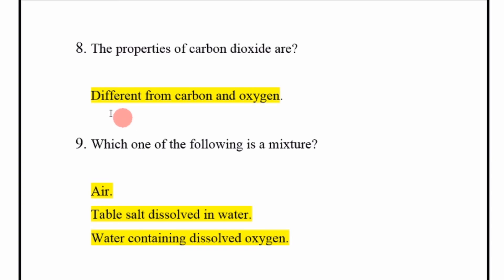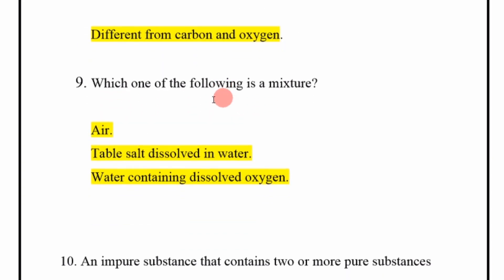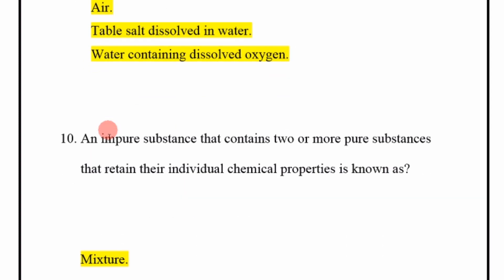Which one of the following is a mixture? Air, table salt dissolved in water, water containing dissolved oxygen. An impure substance that contains two or more pure substances that retain their individual chemical properties is known as a mixture.